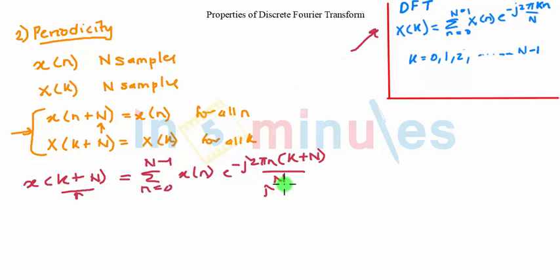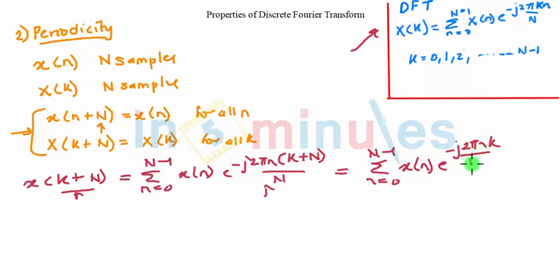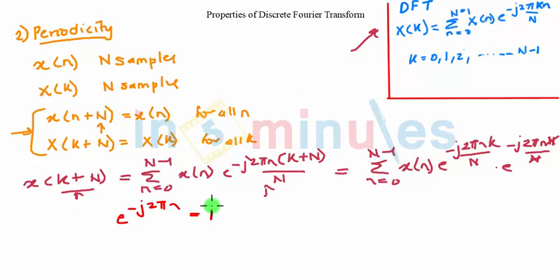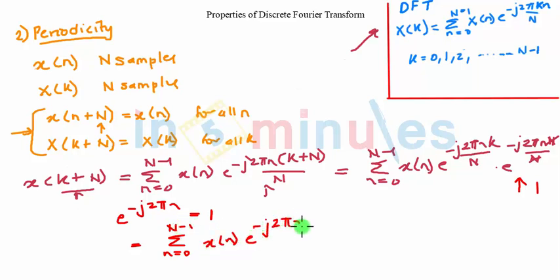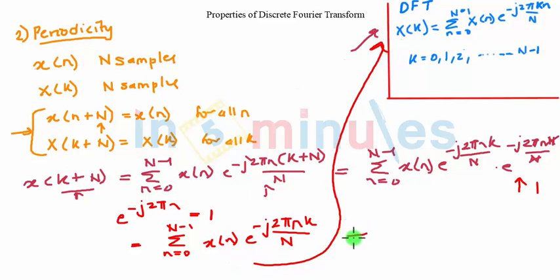Now let us expand this term. It becomes summation from n = 0 to N minus 1 of x of n times e raised to minus j 2 pi n k by N, multiplied by e raised to minus j 2 pi n times N divided by N. The capital N gets cancelled, and we also know that e raised to minus j 2 pi n k upon N is exactly the original formula. So we finally get x of k, and by this the periodicity property is proved.